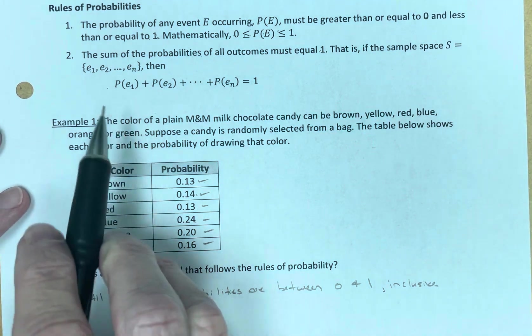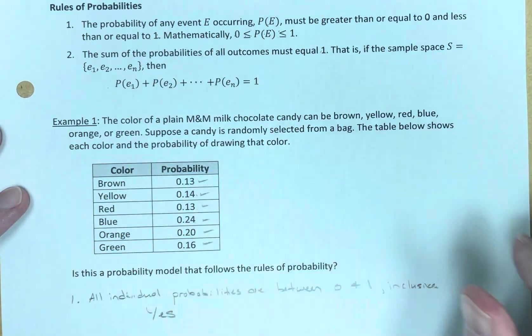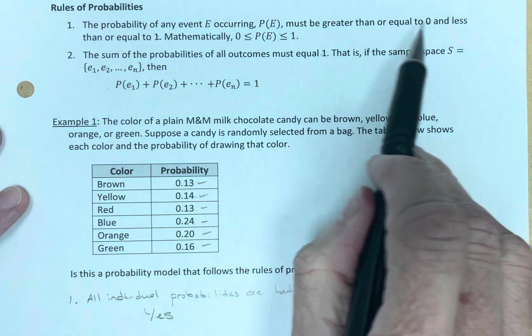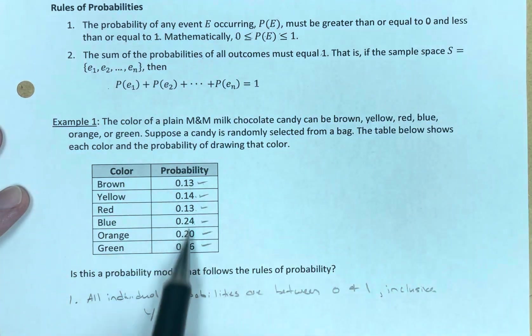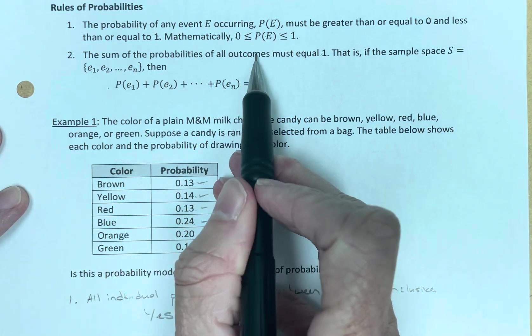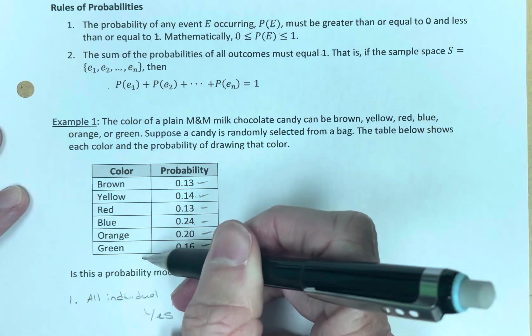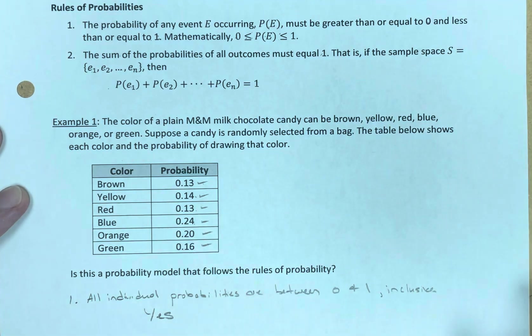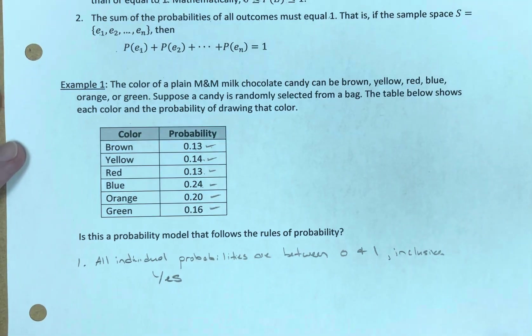So rule number one. The probability of any event occurring must be greater than or equal to 0 and less than 1. We're there. Rule number two. The sum of the probabilities of all outcomes, these are all outcomes, must equal 1. We want to have every outcome accounted for.